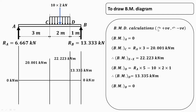For the bending moment diagram, the conventions used are: clockwise moments are positive and anticlockwise moments are negative. At the end points of a simply supported beam, bending moment is zero, so BM at A = 0 and BM at B = 0. For bending moment at C, the only force on the left of C is Ra, which produces a clockwise (positive) moment. Ra multiplied by the perpendicular distance of 3 m gives BM at C = 20.001 kilo newton meter.